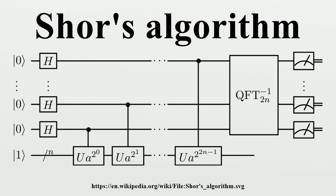In 2001, Shor's algorithm was demonstrated by a group at IBM, who factored 15 into 3 times 5, using an NMR implementation of a quantum computer with 7 qubits.